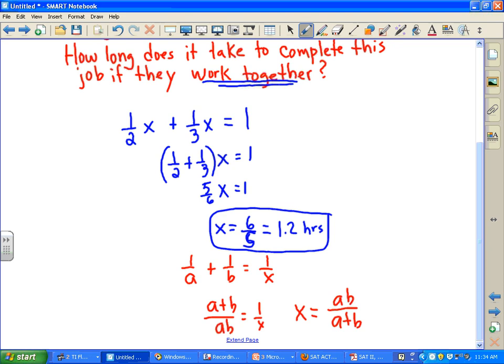So in this case, if a was 2 and b was 3, we could take 2 times 3 divided by the sum 2 plus 3, and you will get 6 over 5, which is 1.2 hours, and you would get exactly the same thing.